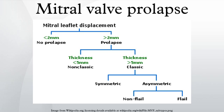Flail versus non-flail: asymmetric prolapse is further subdivided into flail and non-flail. Flail prolapse occurs when a leaflet tip turns outward, becoming concave toward the left atrium, causing the deterioration of the mitral valve. The severity of flail leaflet varies, ranging from tip eversion to chordal rupture. Dissociation of leaflet and chordae tendineae provides for unrestricted motion of the leaflet, giving patients with flail leaflets a higher prevalence of mitral regurgitation than those with a non-flail subtype.